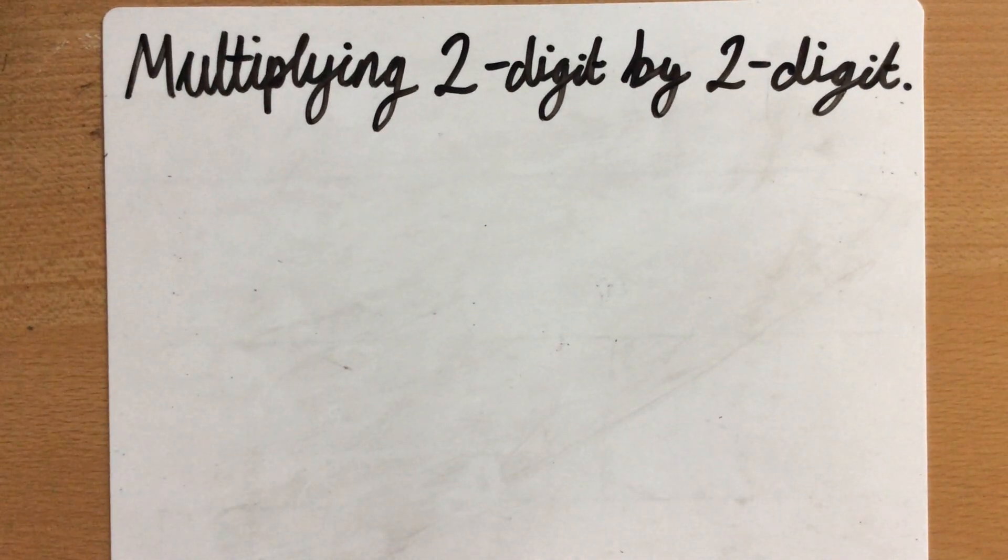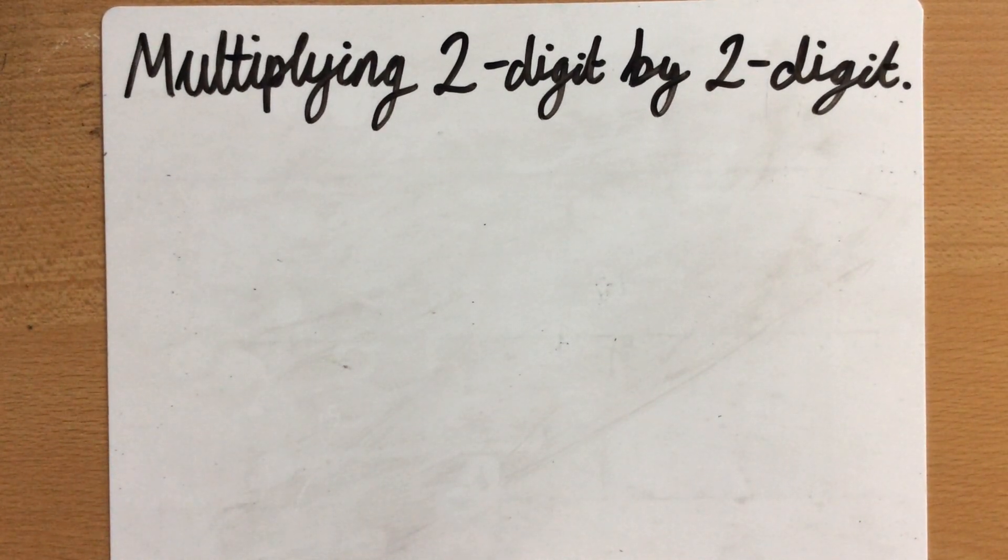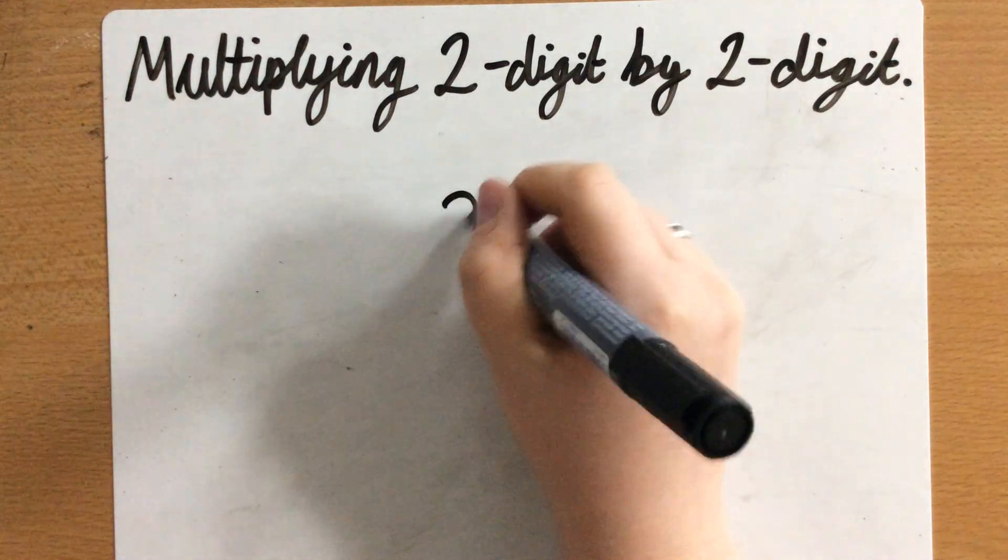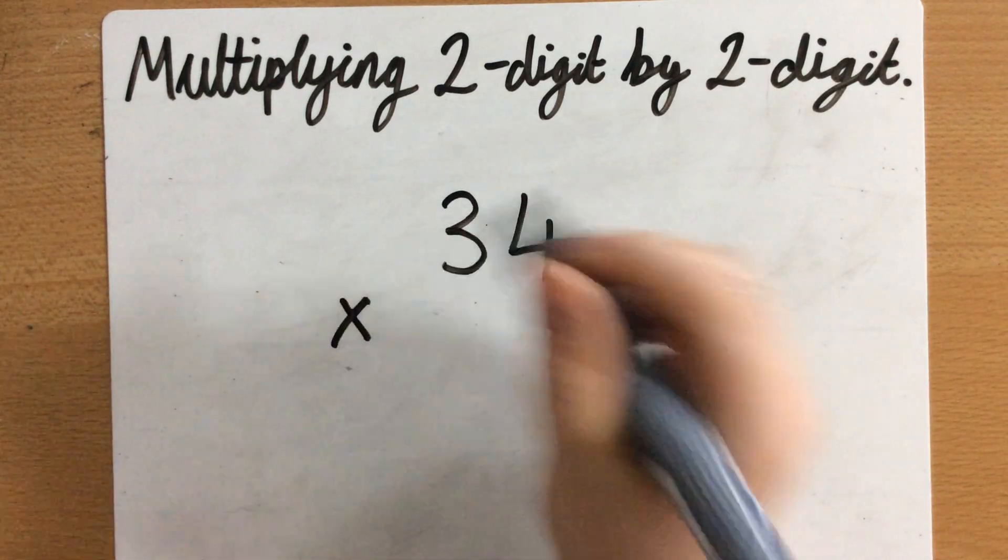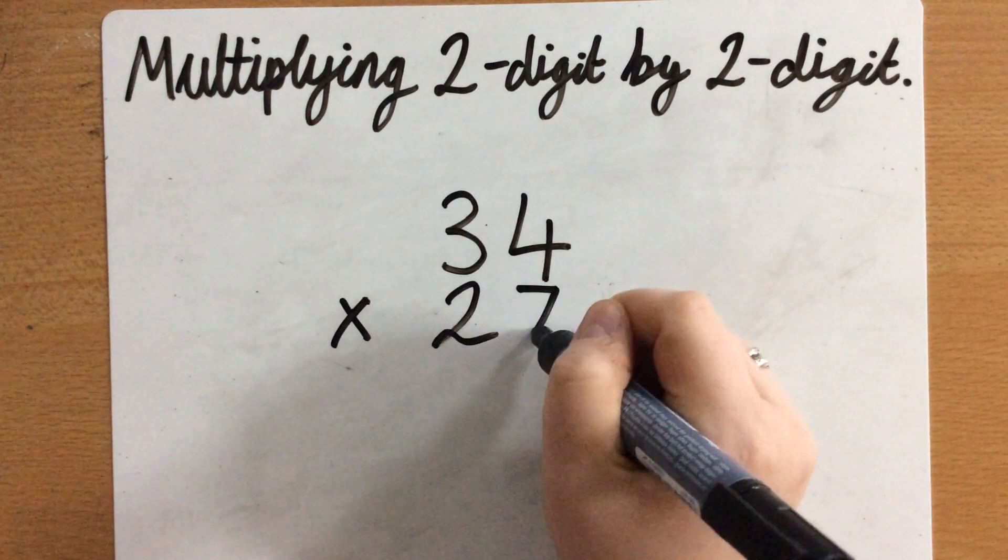Hi Year 5, Miss Parks here. Just thought I'd make a quick video about what we've been doing in maths this week for multiplying a two-digit number by a two-digit number and the method that you can practice at home as well. So if I start by doing 34 times 27.